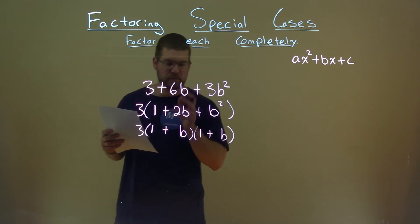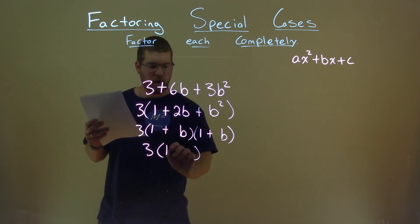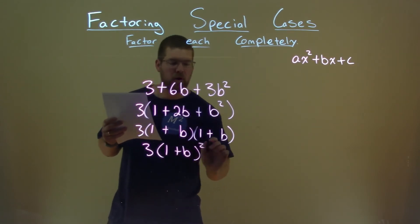But we're not done. Don't get ahead of yourself. We can write this as 3 parenthesis of 1 plus b all squared.